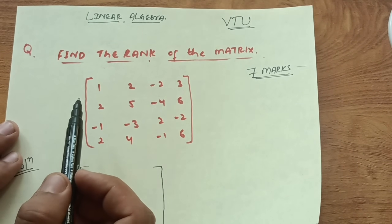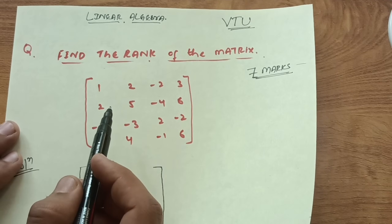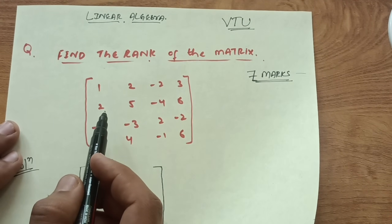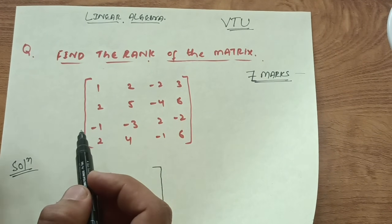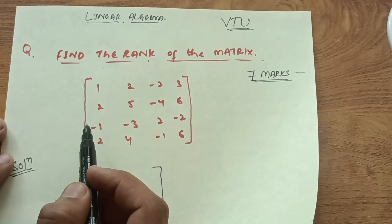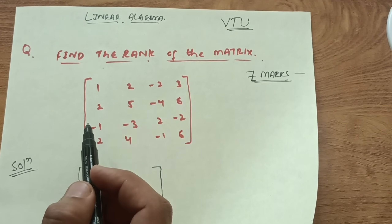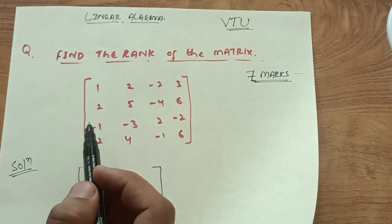Let me tell you first what is the rank of a matrix. Whenever you do row transformations on a matrix, you get another matrix. Whatever may be the number of non-zero rows — if in some row there is a non-zero number and the rest are zeros — that is called a non-zero row.